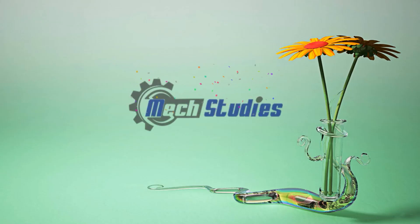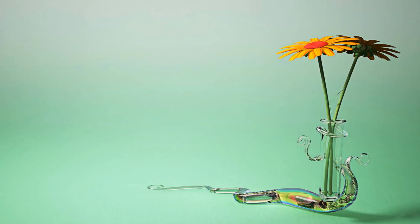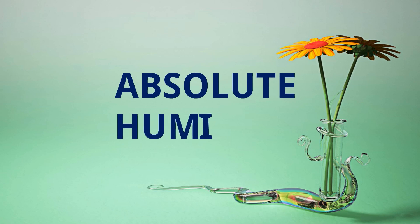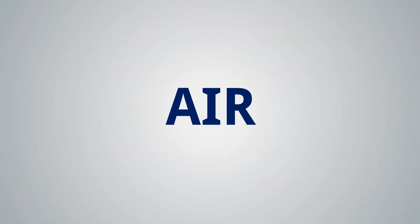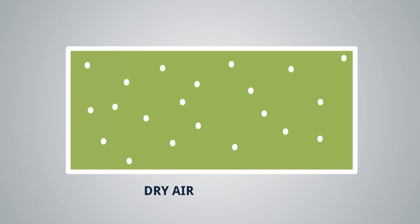Hello friends, welcome to Mixed Studies. Today we are going to learn about absolute humidity, and I hope we will clear the basic concept of absolute humidity. We have already learned that air is a mixture of gases — that is dry air and moisture particles or water vapor, so dry air and water vapor means moist air.